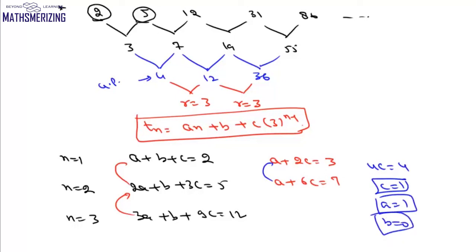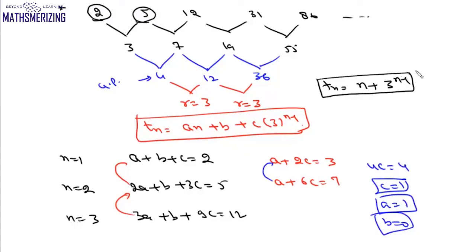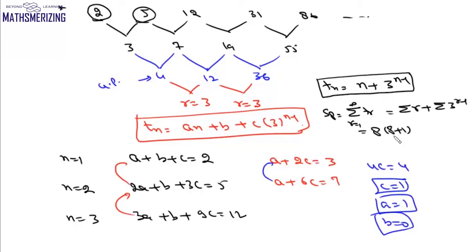So the general term for this sequence is t_n = n plus 3 to the power n minus 1. The sum of the first 8 terms is the summation of t_r for r from 1 to 8, which equals the summation of r plus the summation of 3 to the power r minus 1.